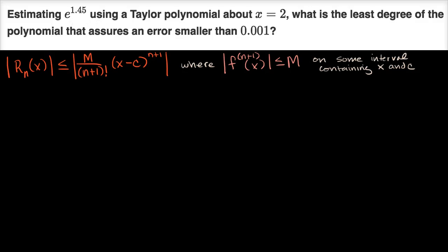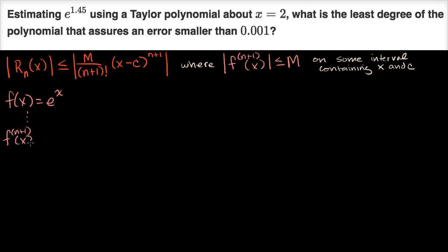For this particular problem, we're trying to estimate e to the x, so f of x is equal to e to the x, and we're trying to estimate f of 1.45. To figure out what m is, let's remind ourselves that the first derivative is e to the x, the second derivative is e to the x, the nth derivative is e to the x, and the n plus one-th derivative is also e to the x, which is convenient.